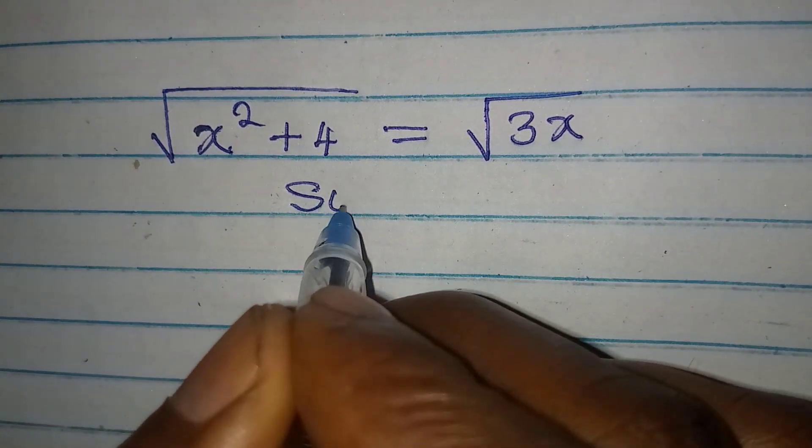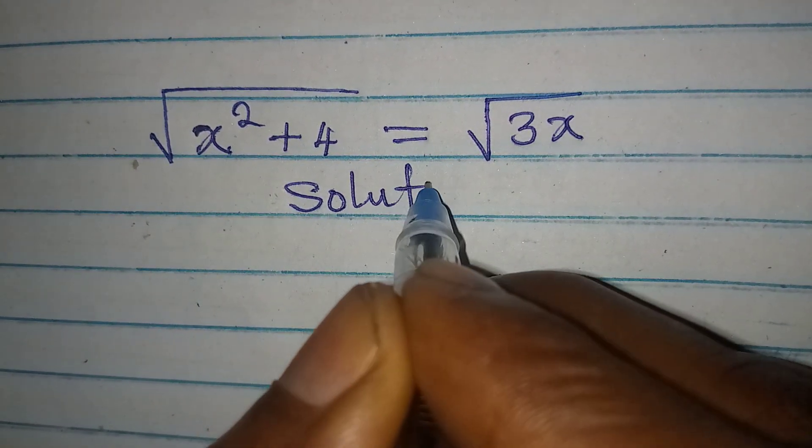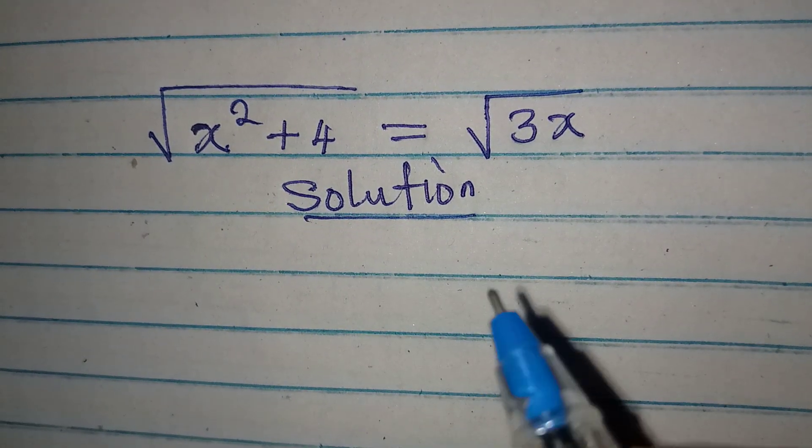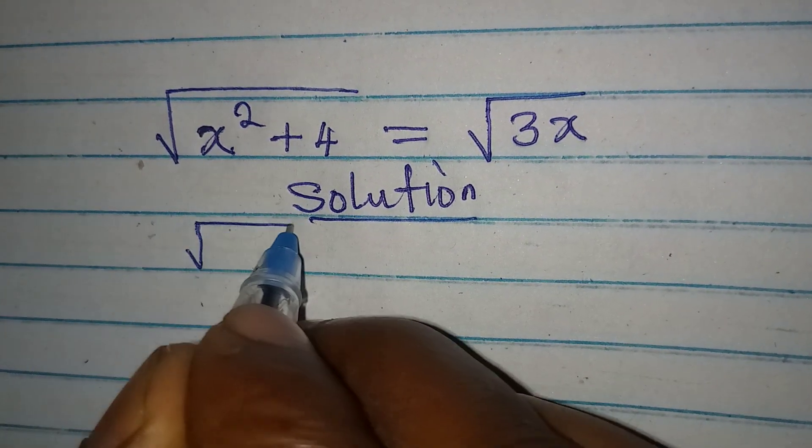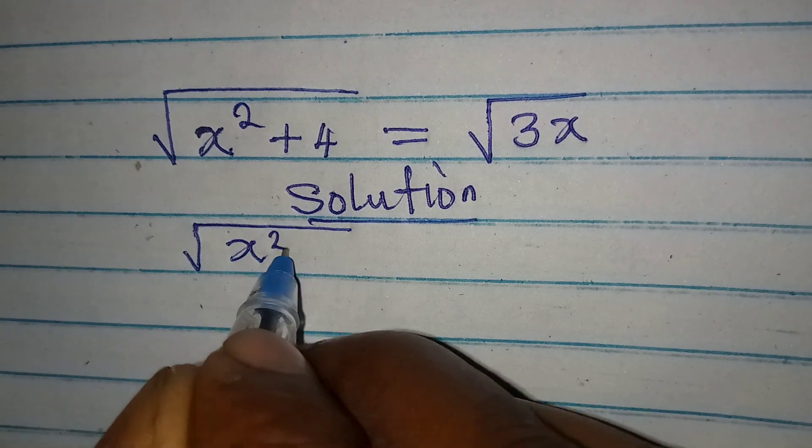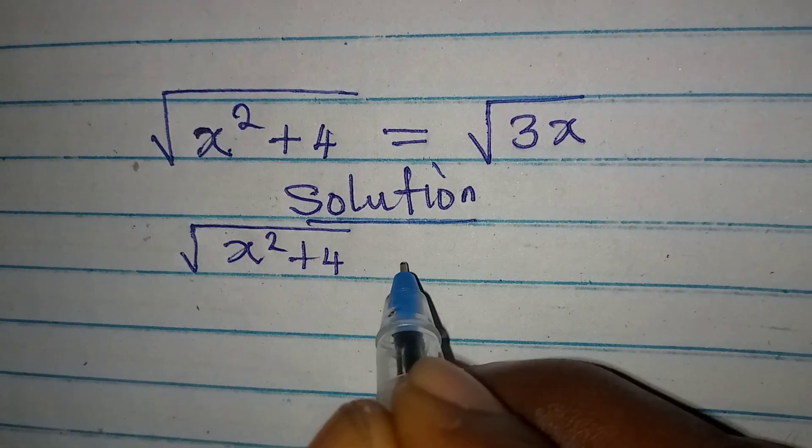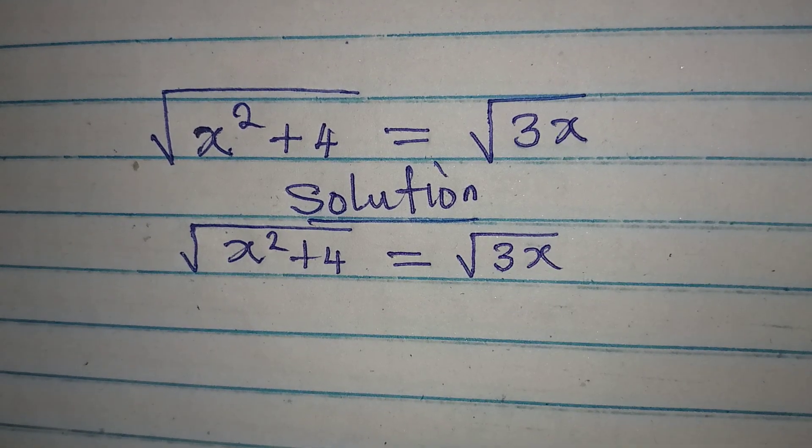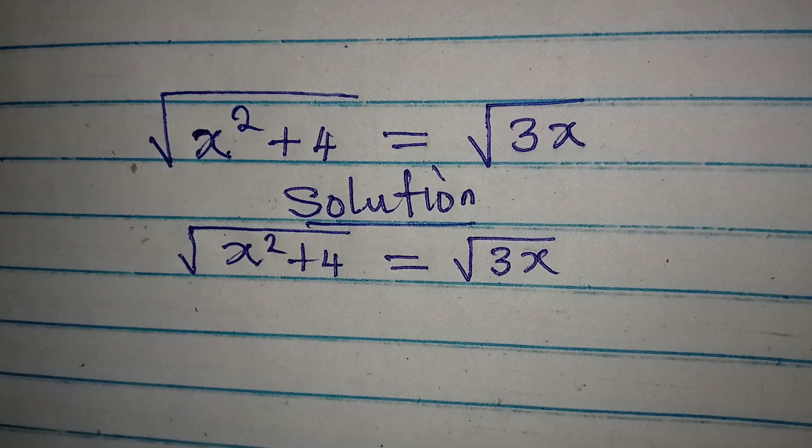Hello everyone, here we have a surdic equation that we can deal with. We have square root of x squared plus 4 being equal to square root of 3x. But do you think this is possible?